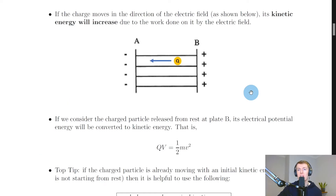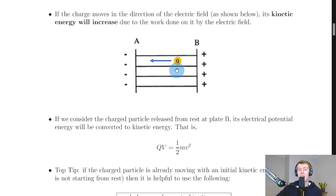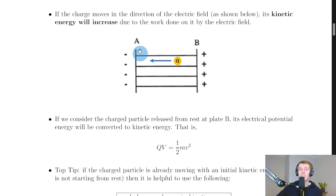Work done equals the change in electrical potential energy. But what happens if the charge moves in the direction of the electric field — moving to the left, with field lines going from positive to negative? In this case, its kinetic energy will increase due to the work done on it by the electric field. By moving against the field lines towards the positively charged plate, you store electrical potential energy. If you then let the charged particle go, that energy converts to kinetic energy as it moves toward the left, repelled from the positive plate and attracted toward the negative plate.